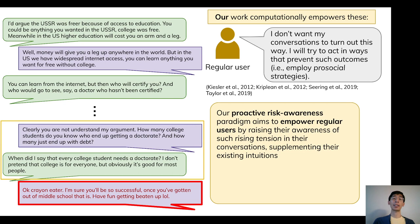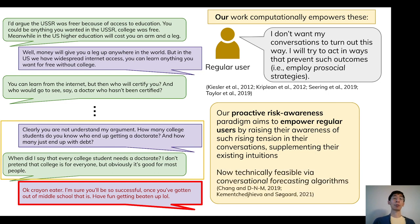This forms the basis of our proposed proactive risk awareness paradigm, which aims to empower regular users by raising their awareness of rising tension, thereby supplementing their existing intuitions about the future trajectories of conversations and the need for prosocial strategies. This paradigm has only recently become technically feasible via the introduction of a new class of algorithms known as conversational forecasting, which are designed to predict the future trajectory of conversations. We use these to forecast whether conversations are at risk of derailing into norm-violating behavior.